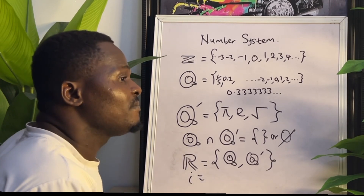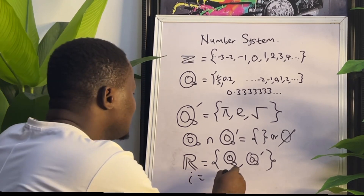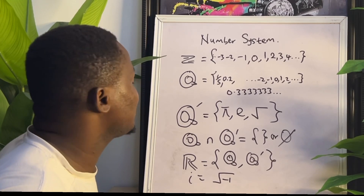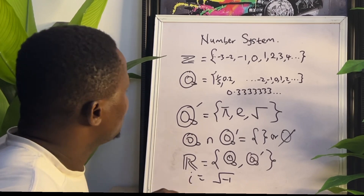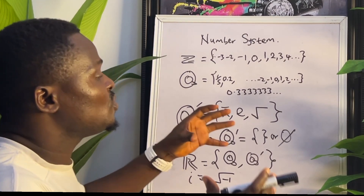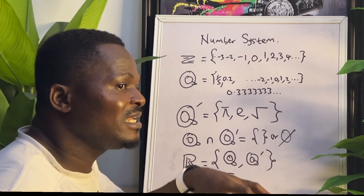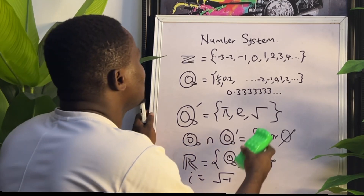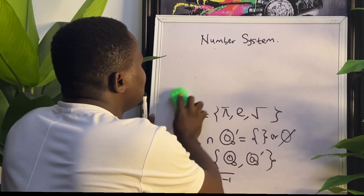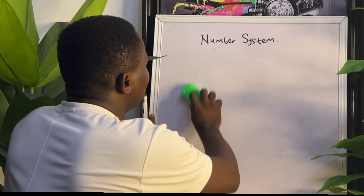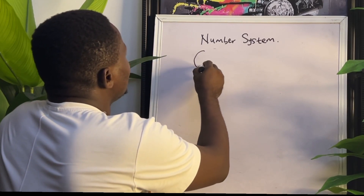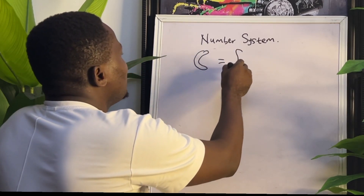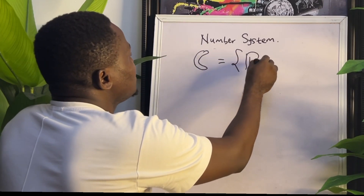The imaginary number system is mathematically always written as the square root of minus one. Therefore, whenever we see the square root of minus one, the answer is imaginary. Now the real number system and the imaginary number system together are found inside another bigger number system — that is called the complex number system. The complex number system is made up of both the real and the imaginary number systems, symbolically written as C, where part of it is real and part is imaginary.